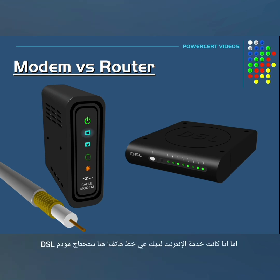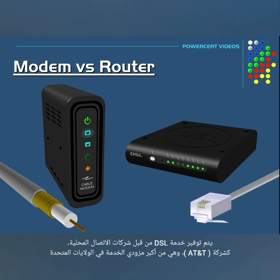And DSL modems are connected using a typical phone line. DSL is provided by companies such as AT&T, which is the largest provider in the US.